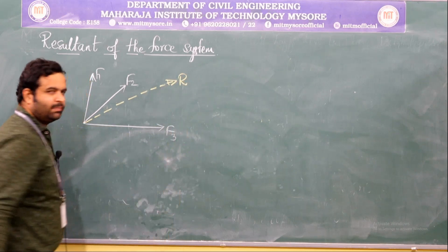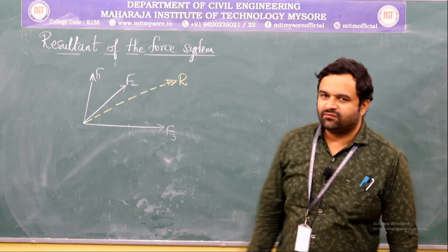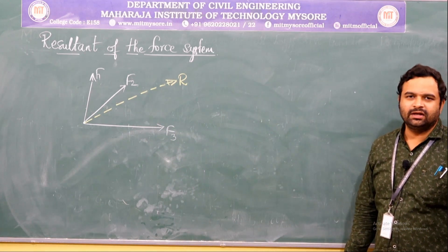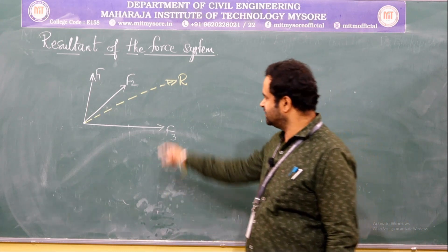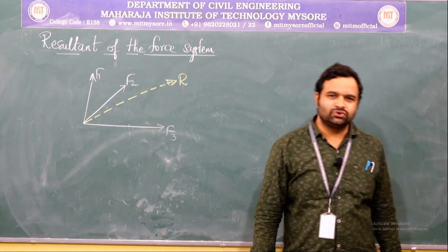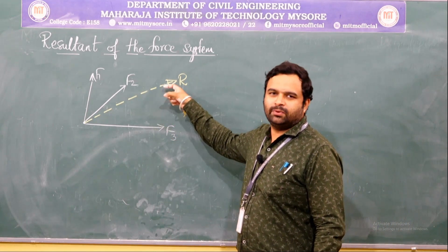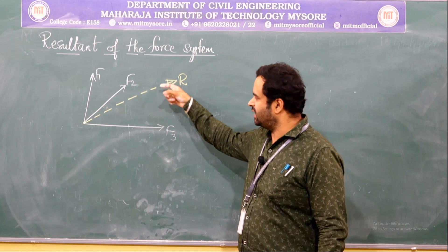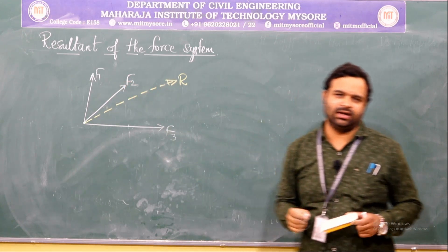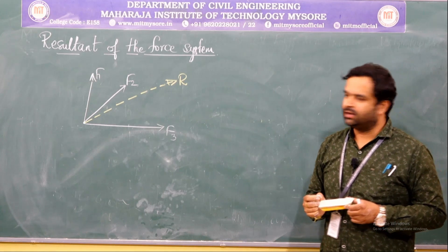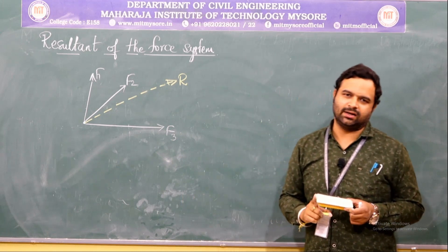It is denoted by the resultant force R. You can replace the number of forces acting on a body by a single force R, so that R also produces the same effect as that of the forces F1, F2, F3 on the body. You can replace F1, F2, F3 by a single force called the resultant R.